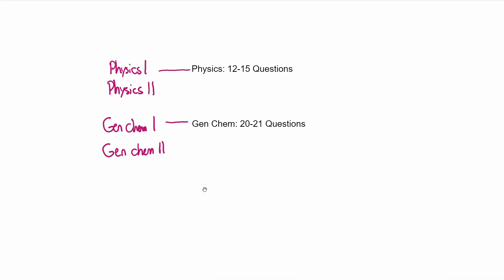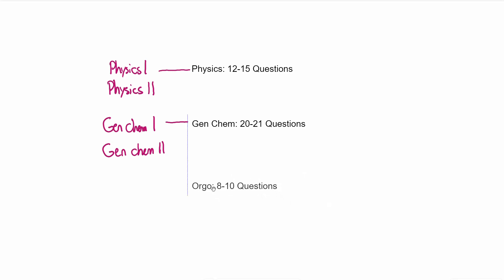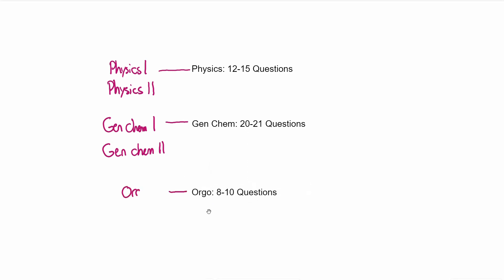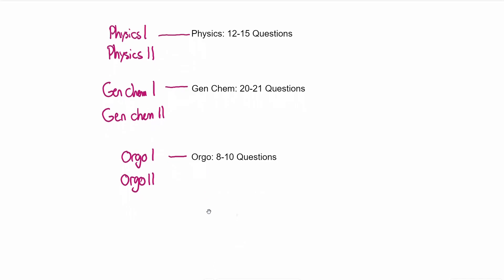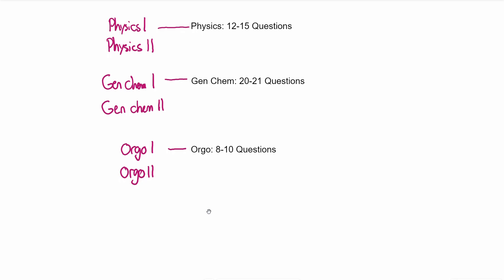Finally, in terms of this section, we've got organic chemistry, also known as orgo. Orgo is about 8 to 10 questions per exam, so it has the lowest yield of these three subjects — meaning the least amount of content is tested. Orgo is two classes: Orgo 1 and Orgo 2. These are classes you understood you'd have to take because this material is on the MCAT.